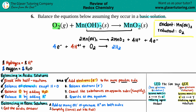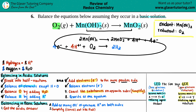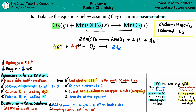Step seven: cancel like substances on opposite sides — we're simplifying. The four electrons appear on both sides, so they cancel — goodbye. We got the electrons to be equal specifically so we could cancel them out; you don't want electrons in a fully balanced equation. Looking further, I have four H⁺'s here and four H⁺'s over there — same exact number, so they cancel too.